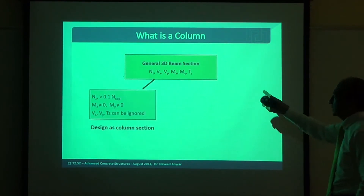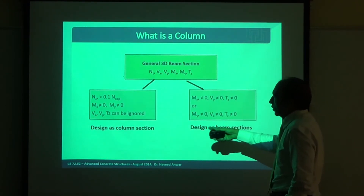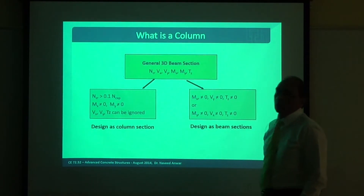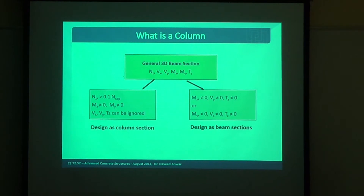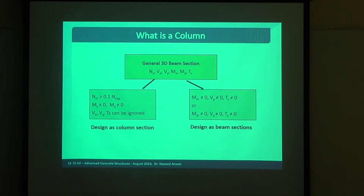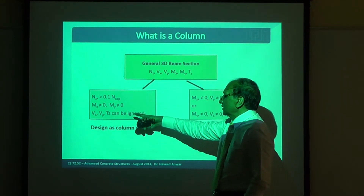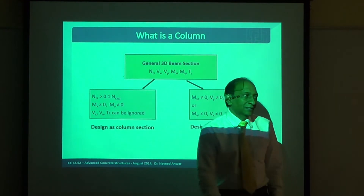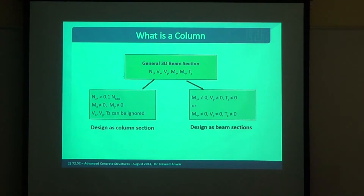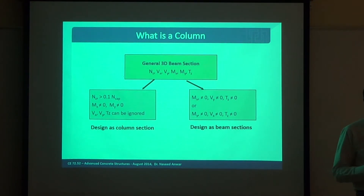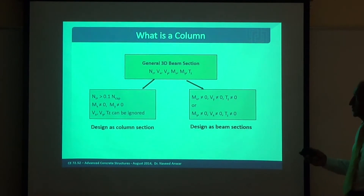So the general 3D beam section — we talked about that. I'm going to talk about members designed as columns, where the axial load is more than 10% of the axial capacity. That is the definition the ACI code uses. If the axial capacity is 1000 tons and the load is more than 10%, we design it as a column, otherwise as a beam. Shear and torsion can be ignored for gravity design, but not for earthquake design.